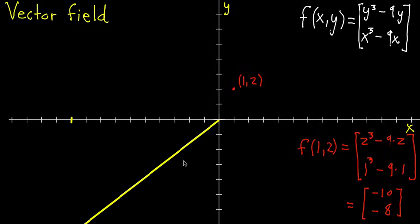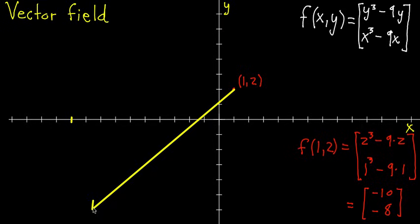But the nice thing about vectors is it doesn't matter where they start. So instead we can start it here, and still have that -10 x component and -8 y component. Negative one, two, three, four, five, six, seven, eight. This is a really big vector.